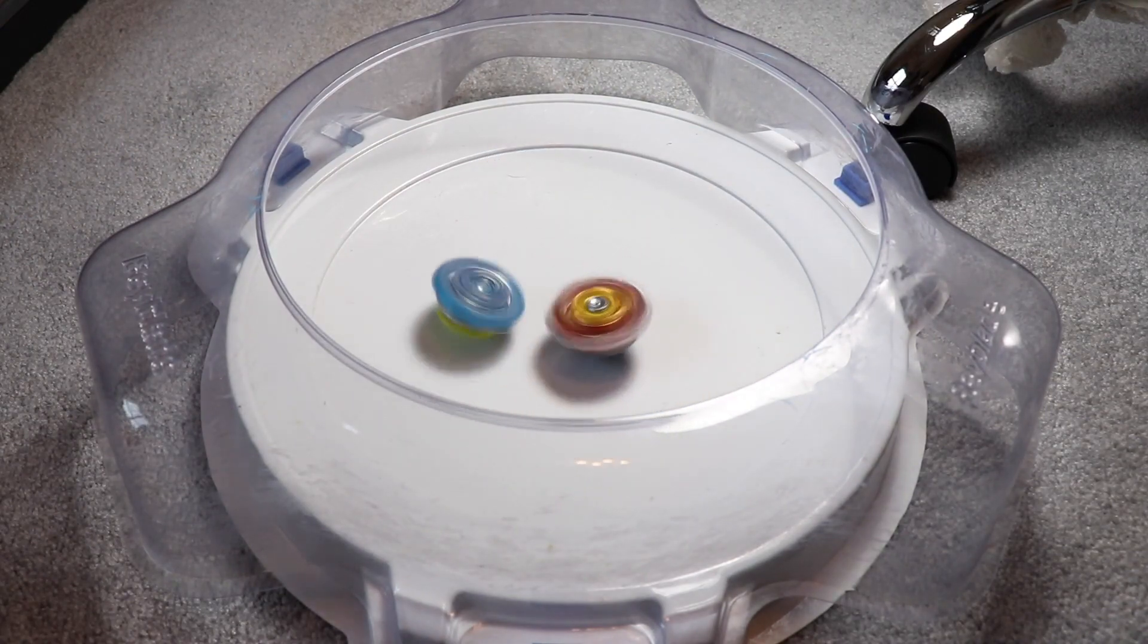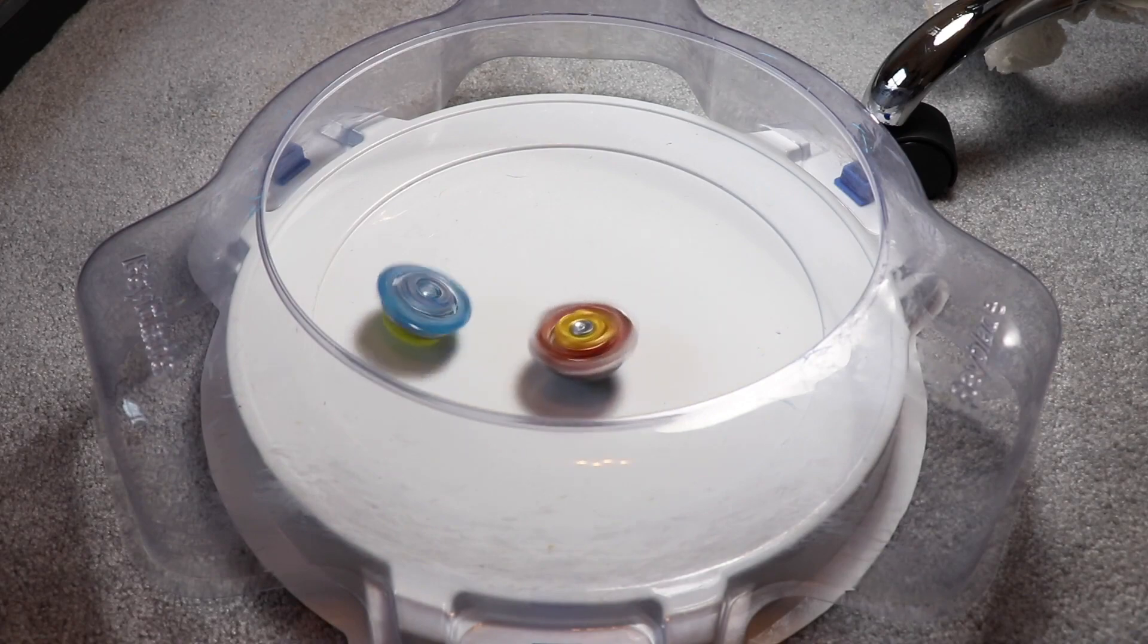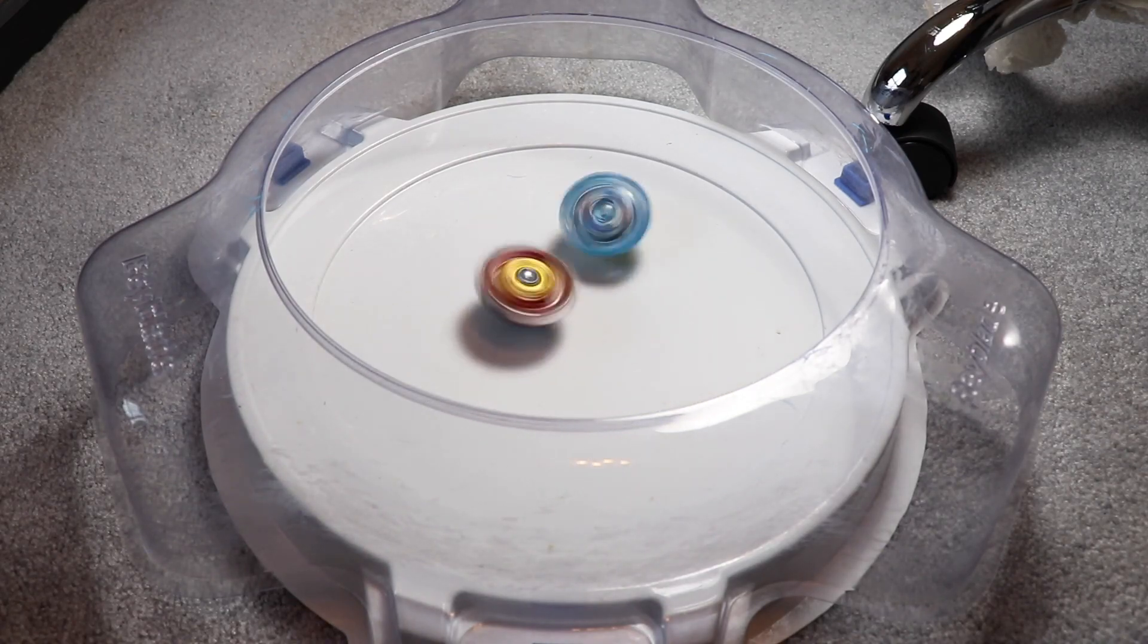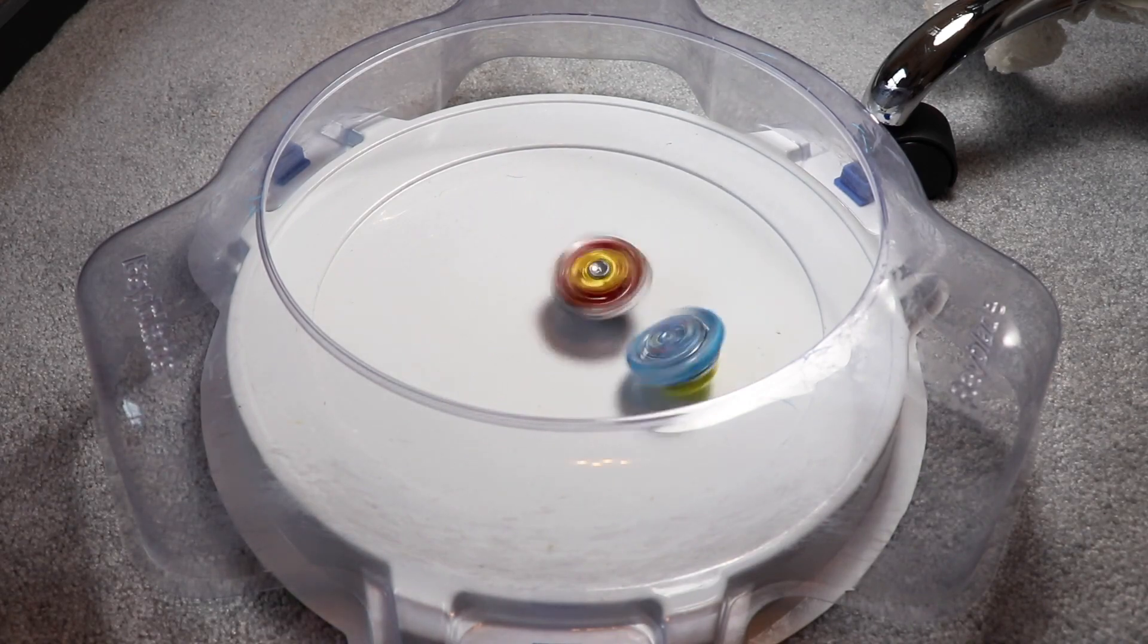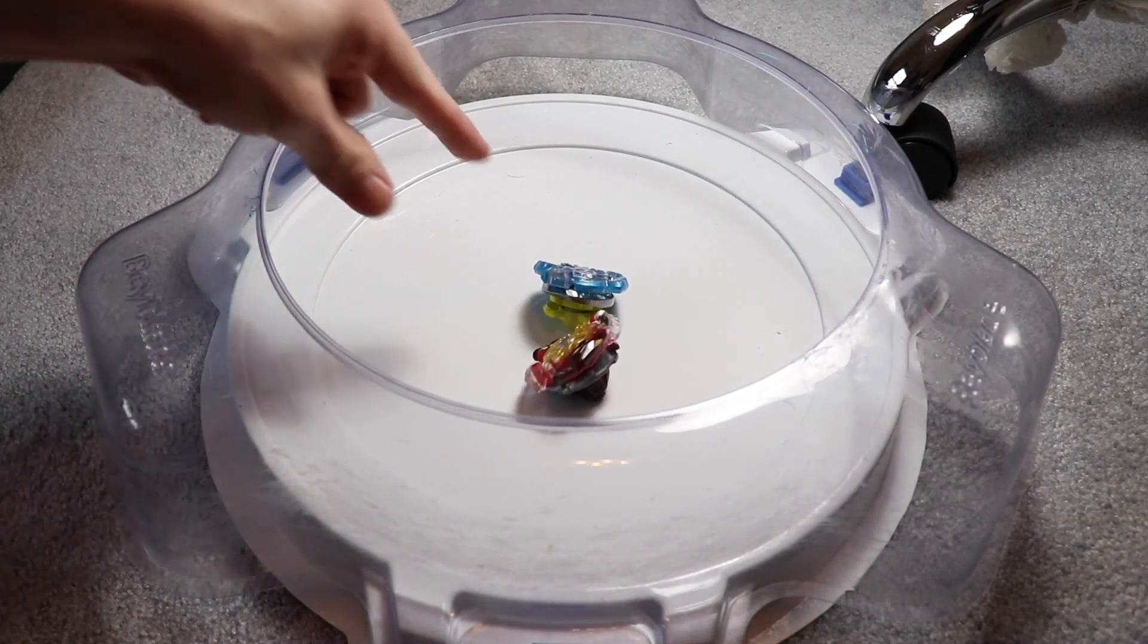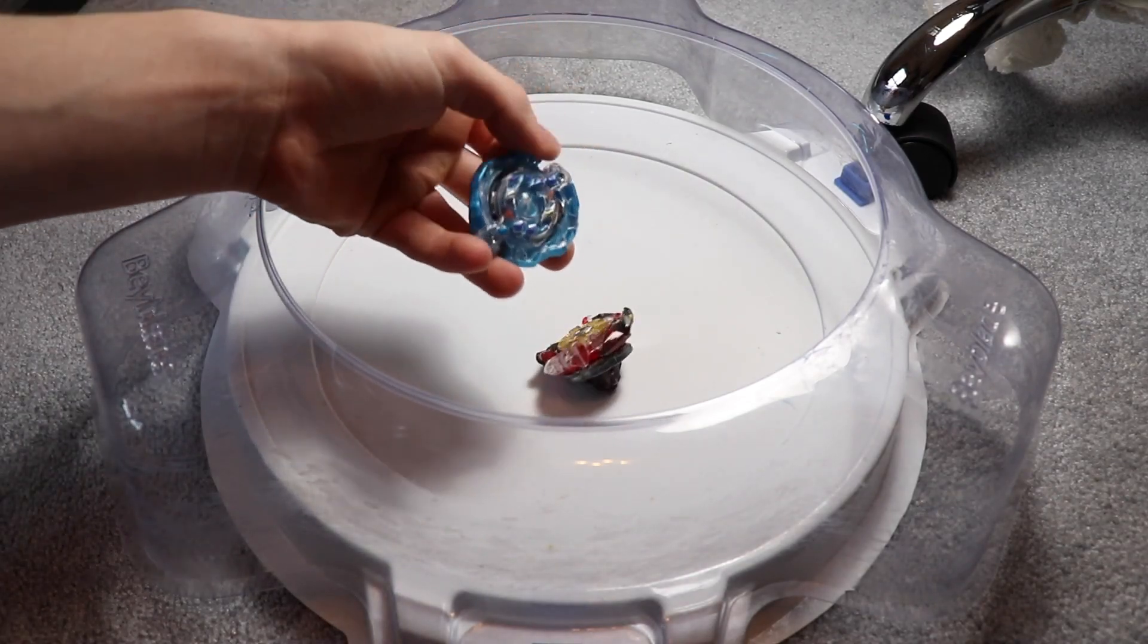Some hard hits from Legend Spriggan, not looking good for Jormungandr J2. That scores 2-1.